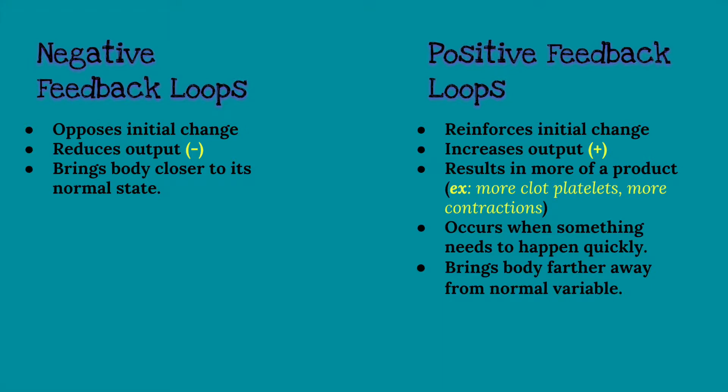However, there are two types of ways the body can do this. The body can do this by decreasing the change in variable, which is the negative feedback loop, or by increasing the change in variable, which is the positive feedback loop. So both the positive and the negative feedback loops respond to change differently, but still will result in the body being brought back to its normal state.